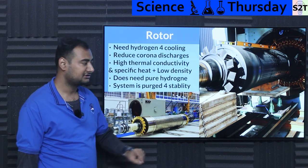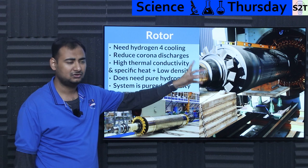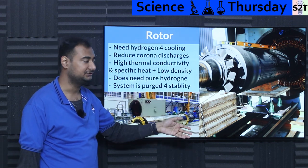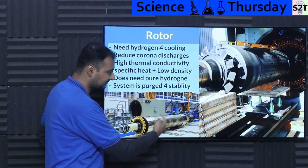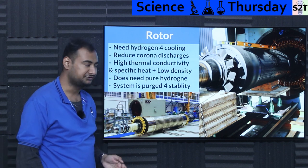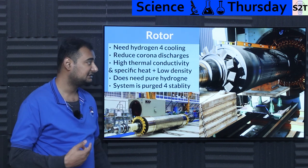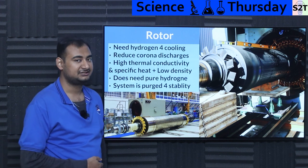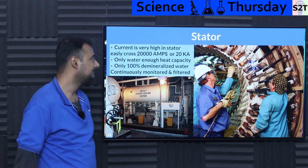That's why all turbo generators have fans on the front and back ends — they circulate the hydrogen for cooling. Some generators are air-cooled, but those are much lower power. High-power turbo generators generally must use hydrogen, because the energy going into the rotor is idiotically high — not measured in amps, but in kilo-amps.